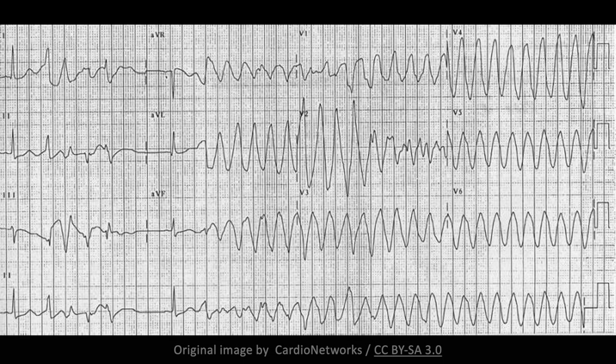Here is another ECG of torsade des points. Note the width and variation in QRS complexes indicating that this is a polymorphic ventricular tachycardia. The reversal of waveform polarity, however, is somewhat harder to identify in this example.